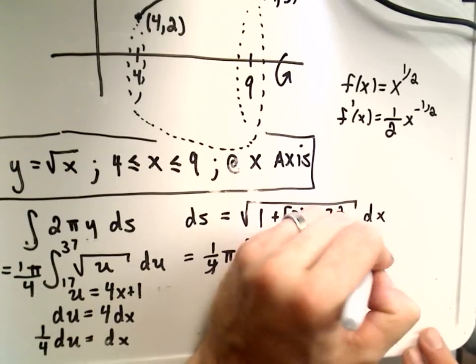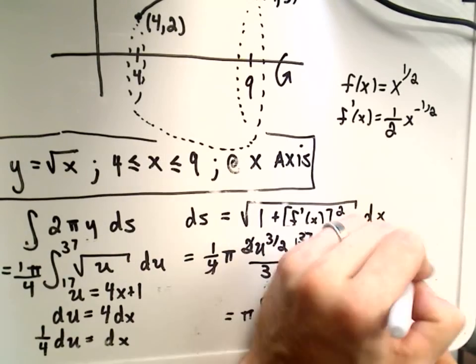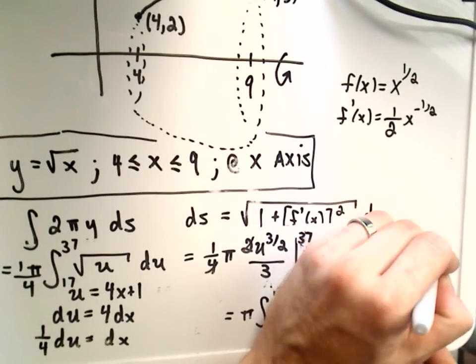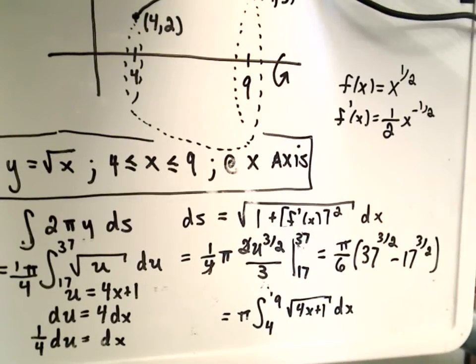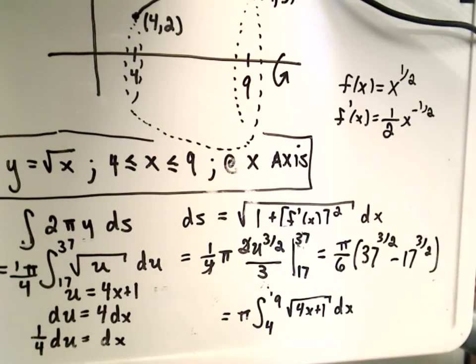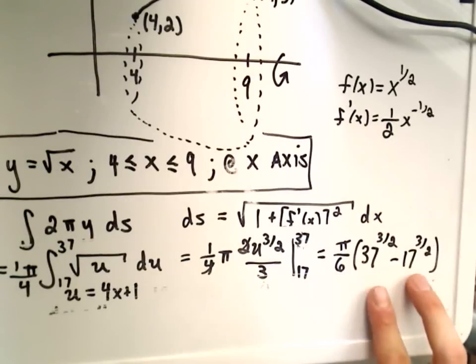And then we're going to have 37 raised to the 3/2 power minus 17 raised to the 3/2 power. And that's going to be our surface area. So I am not going to bother to simplify that number down at all. We'll just leave it like that.